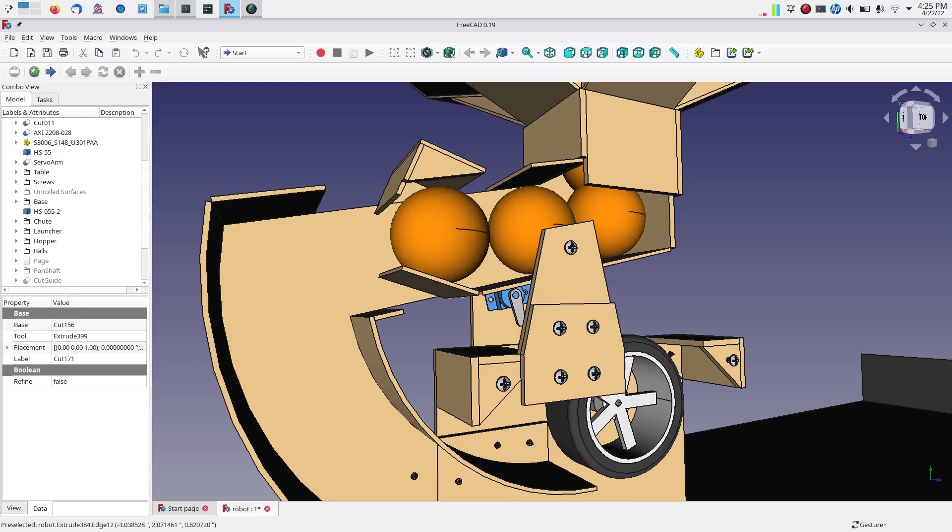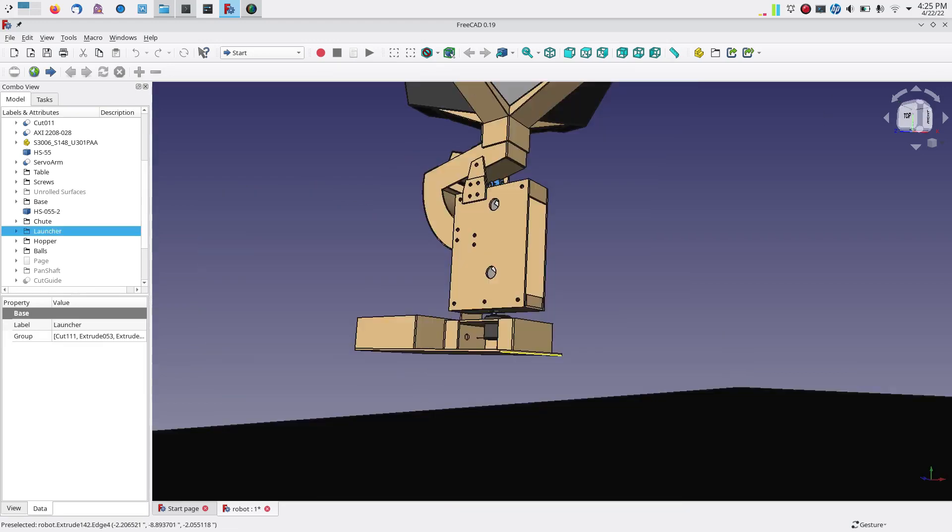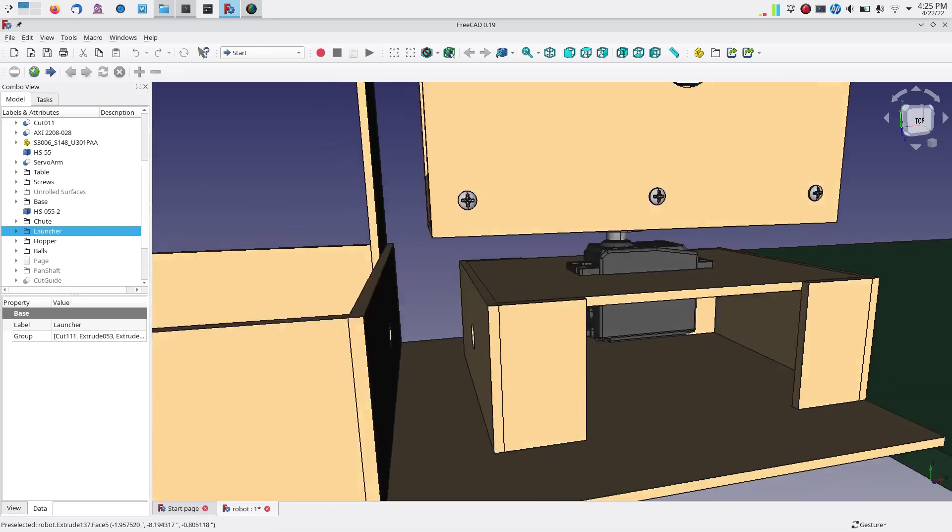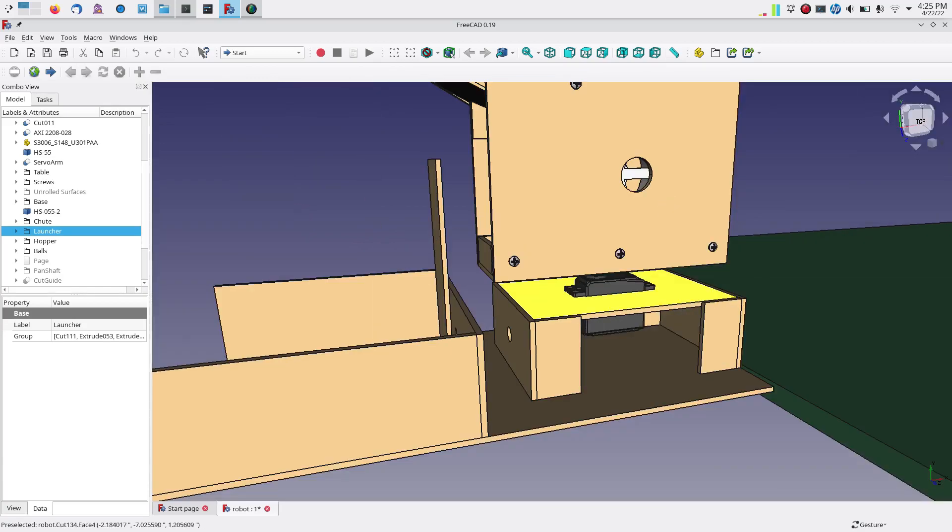And then when the servo opens up, the flap comes down, and then the ball goes down. In my design, I also have a servo at the base that rotates the whole thing left and right so that it can oscillate or change the angle.